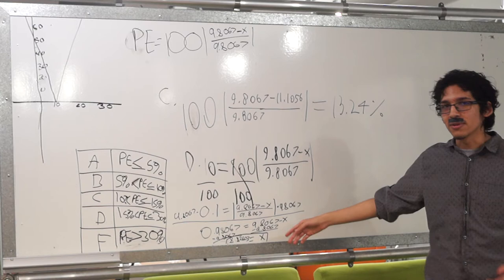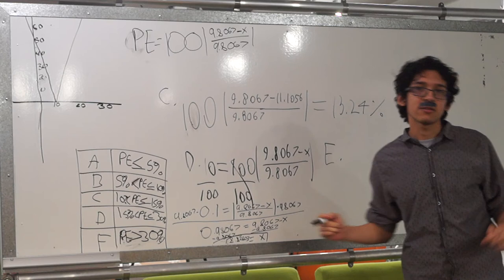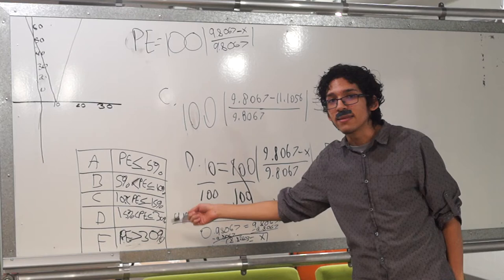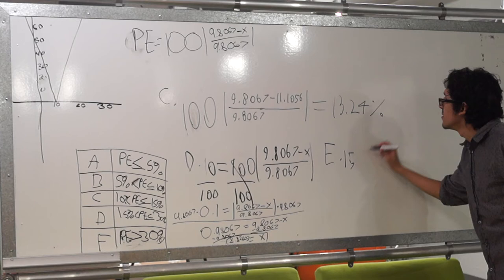Trevor needs at least a C to pass. I'm just writing the equation. 5% is less than or equal to PE, and then PE is less than or equal to 50%.